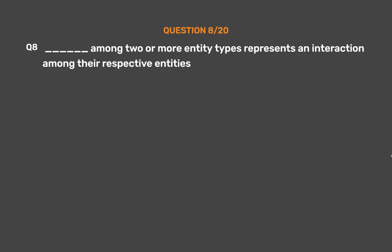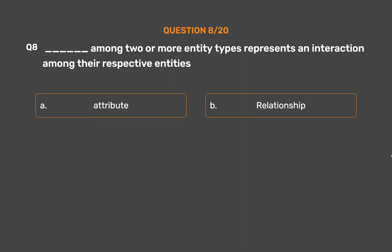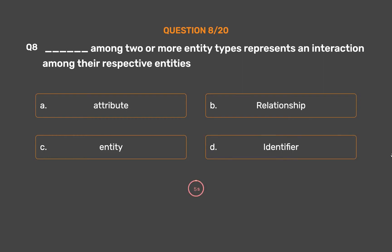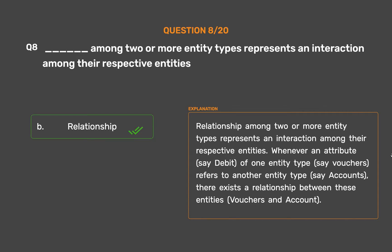Question number 8. ___ among two or more entity types represents an interaction among their respective entities. Option A: Attribute. Option B: Relationship. Option C: Entity. Option D: Identifier. The correct answer is Option B: Relationship. Relationship among two or more entity types represents an interaction among their respective entities. Whenever an attribute, say debit, of one entity type, say vouchers, refers to another entity type, say accounts, there exists a relationship between these entities — vouchers and account.